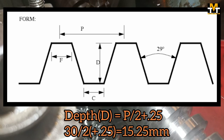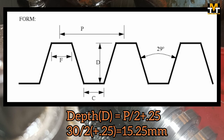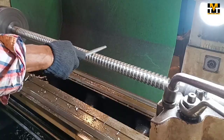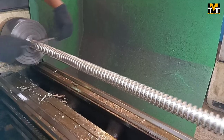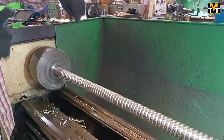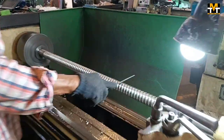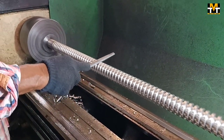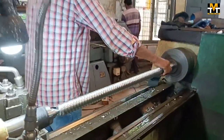Then we will use the thickness of P by 2 plus 0.25. We will use the depth of P by 2 plus 0.25. We will do this to finish the final calculation of P by 2.25. I will use the Theta ASSP by 2.25, so it will be removed as per 3.25.